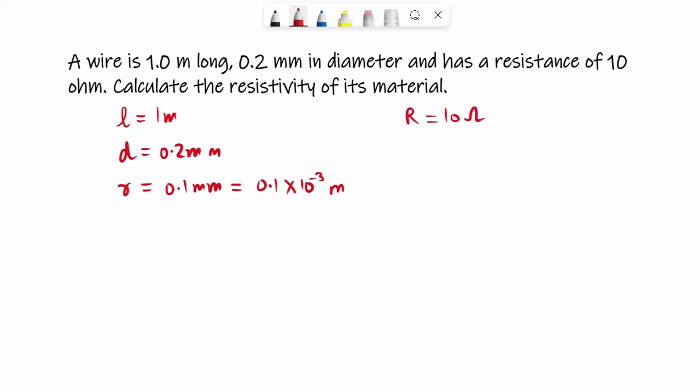The resistance is there, R is 10 ohm, and you have to find the resistivity of its material. So R is equal to ρL/A. And if you want to put the value of area in it, which is πr², area of cross section, then R = ρL/(πr²).